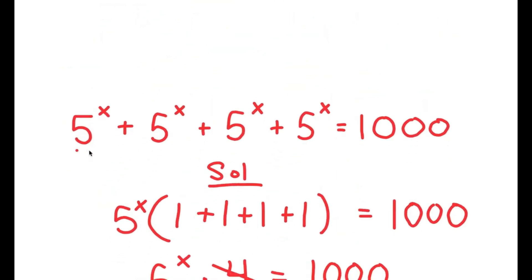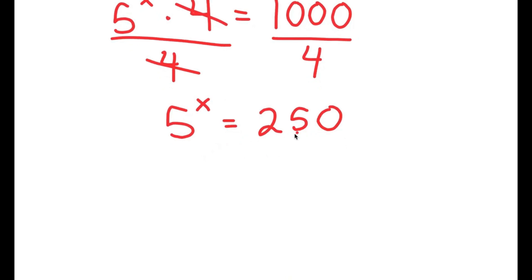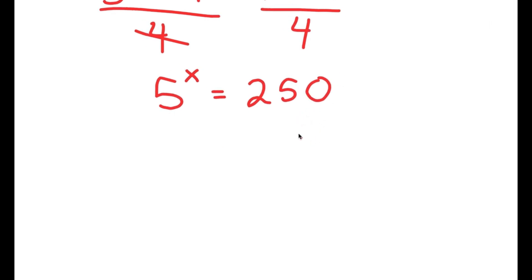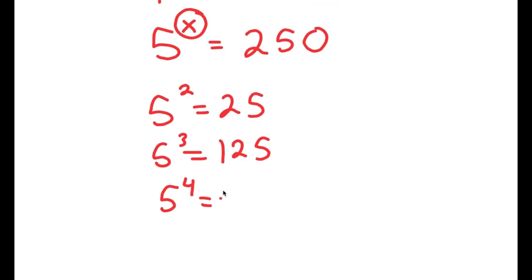So from this large equation here, we got up to an equation that is significantly smaller. We have 5 to the power of x equals 250, and just at first glance we can tell that x is not going to be a whole number, because 5 squared is 25, 5 to the power of 3 is 125, and 5 to the power of 4 is 125 times 5, which is 625. So the value of x is somewhere in between 3 and 4.